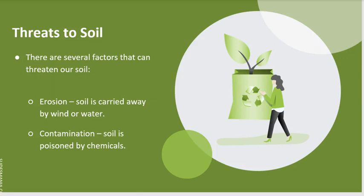Threats to soil. There are several factors that can threaten our soil. First, there's erosion — that's when soil is carried away by wind or water. Second is contamination — that's when soil is poisoned by chemicals.